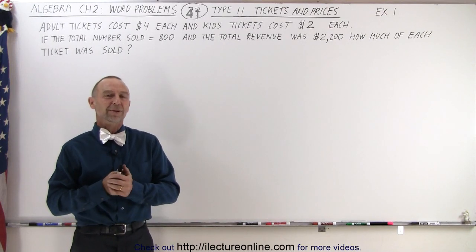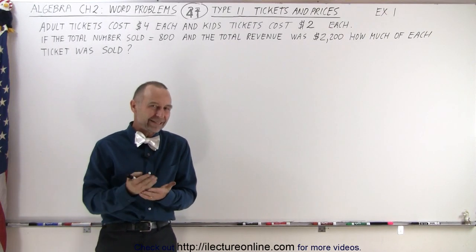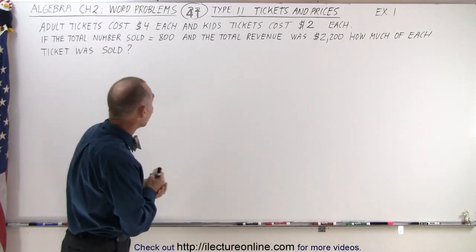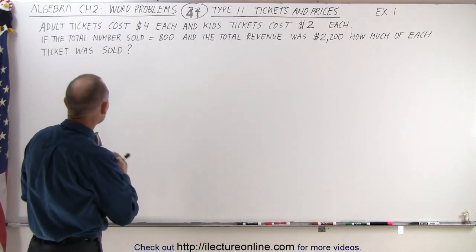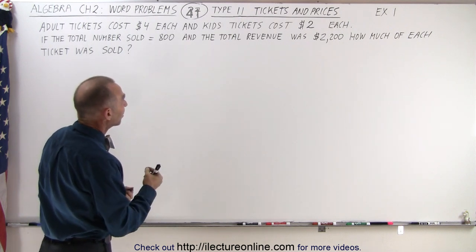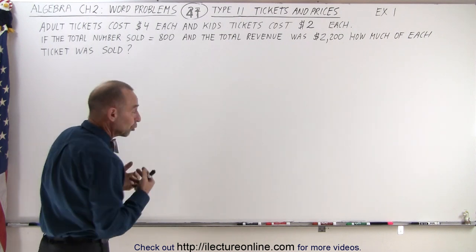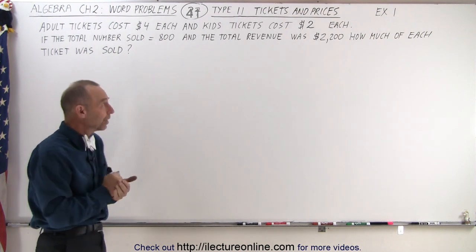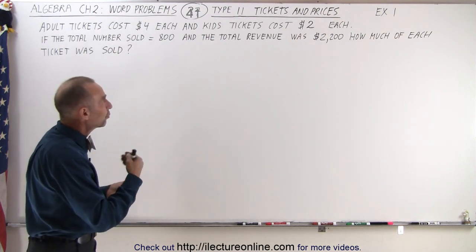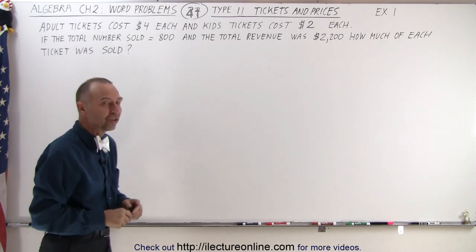Welcome to our lecture online. Our next type of word problem deals with tickets and ticket prices. Here's our first example: adult tickets cost $4 each and kids tickets cost $2 each. If the total number of tickets sold is 800 and the total revenue was $2,200, how many of each ticket was sold?